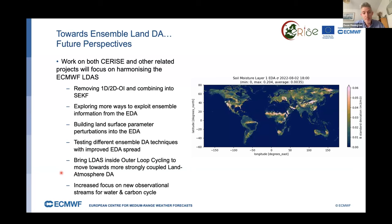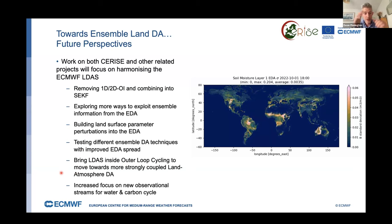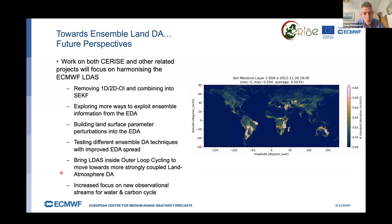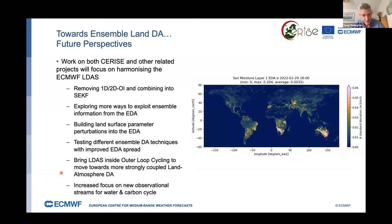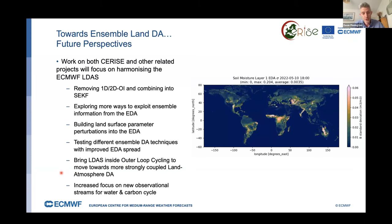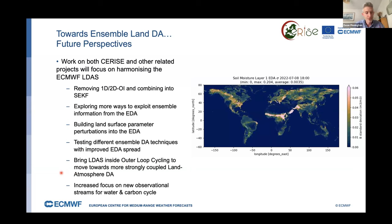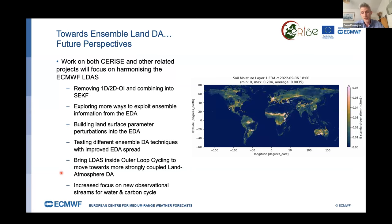We are also bringing the LDAS into the outer loop cycling of the 4D-Var to make it more strongly coupled than it currently is, and we have an increased focus on new observational streams for both the water and carbon cycle — including things like vegetation optical depth and solar-induced fluorescence.